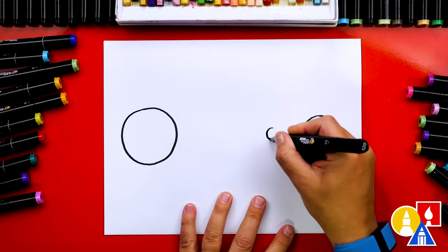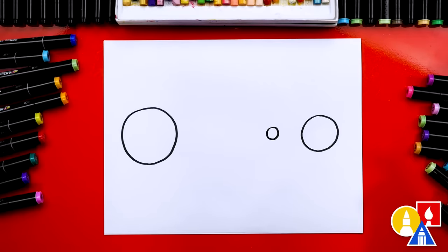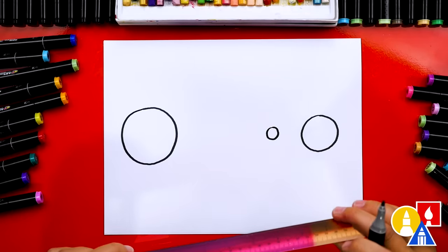So we'll draw maybe right about here. I'm going to draw this big. That should work. Okay now we're going to use a ruler to draw the light and also the shadows.